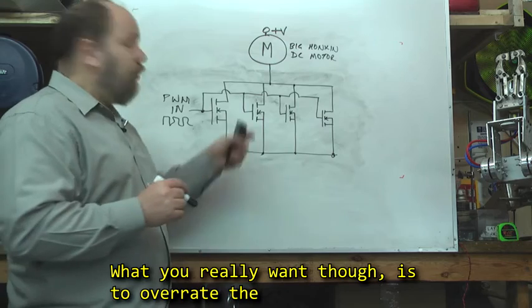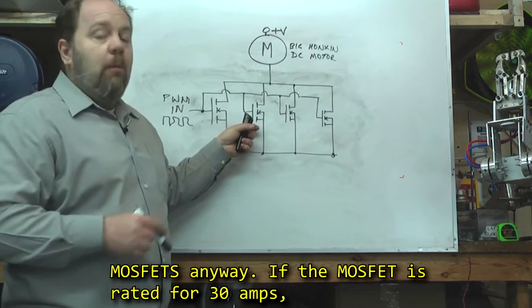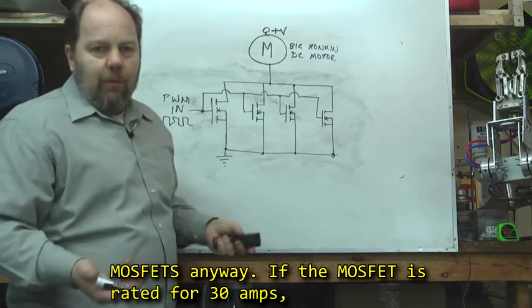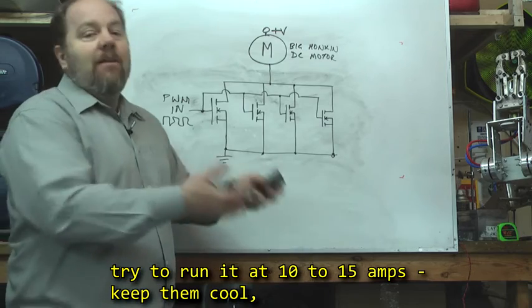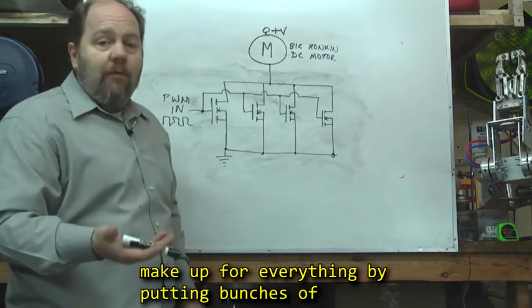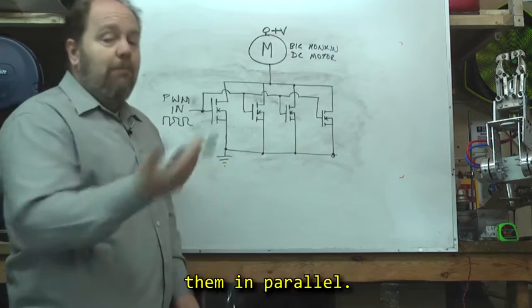What you really want though is to overrate the MOSFETs anyway. If the MOSFET is rated for say 30 amps, try to run it at say 10-15 amps. Keep them cool, make up for everything by putting bunches of them in parallel.